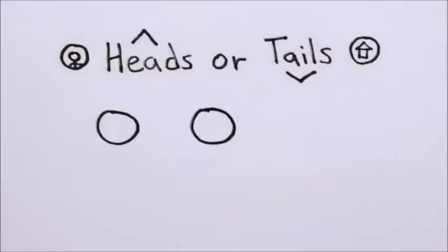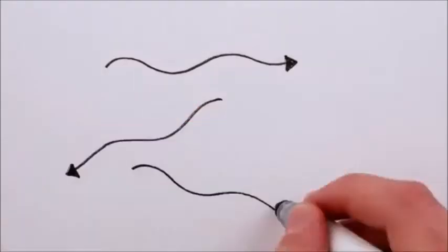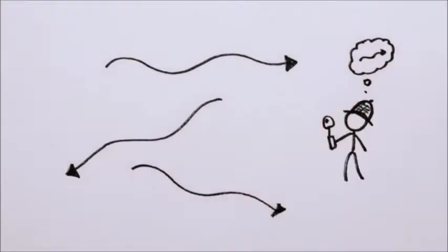Imagine flipping two coins. They can either be in the same state, or in different states. But photons aren't like coins. No matter how hard you try, you can't tell one apart from another.